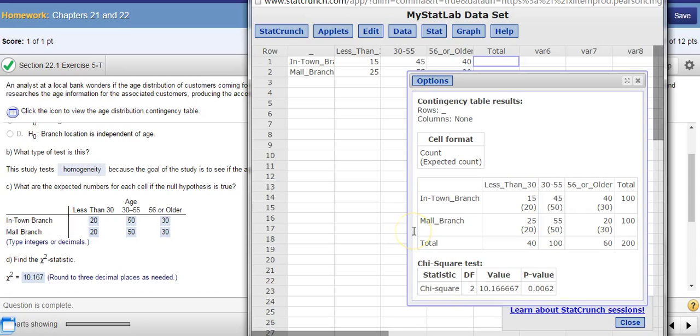So the degrees of freedom is 2. Why is that? When we have a table, and then we want to do the chi-square test, our degree of freedom will be the row number minus 1. In this case, it would be 1 times the column number minus 1. So we have 3 columns minus 1, 2. And this 2 minus 1, 1 times 2. That's 2. So that's why the degree of freedom is 2.